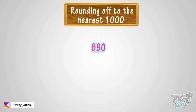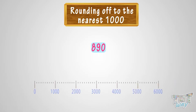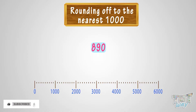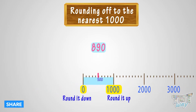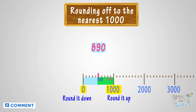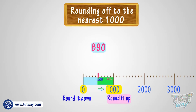Let's take the next number: 890. We have to round 890 to the nearest 1000. See the number line. Where can you fit 890? It is somewhere between 0 and 1000. 890 is above or after the 500 mark, so we will round it up to 1000.